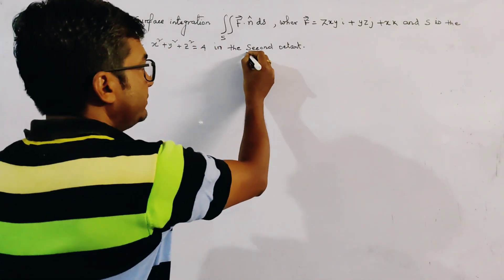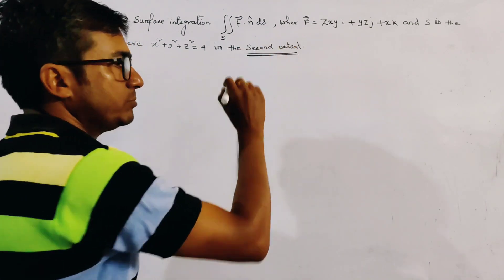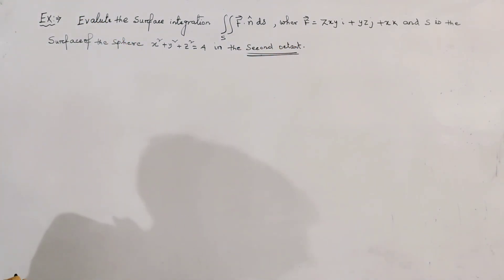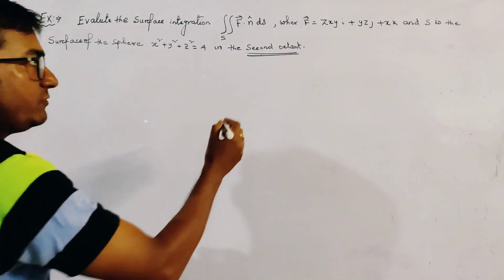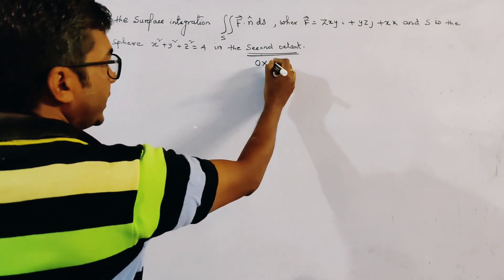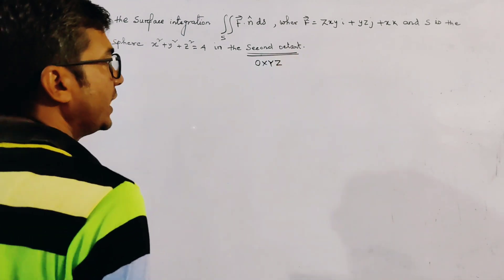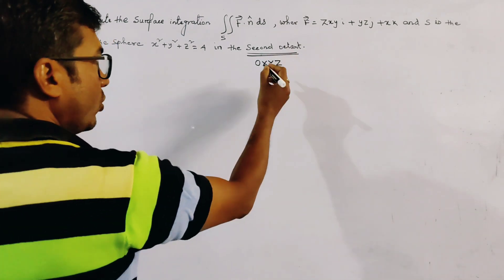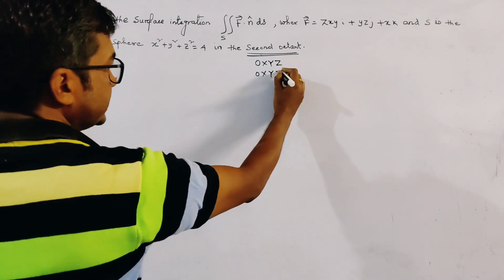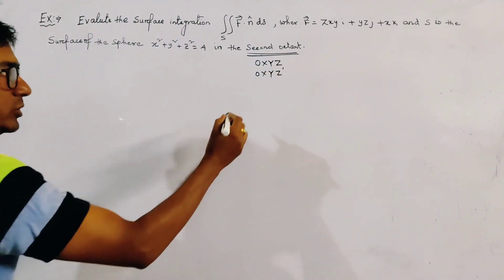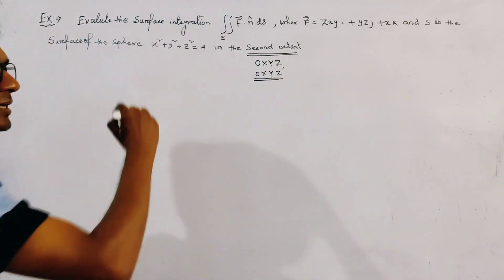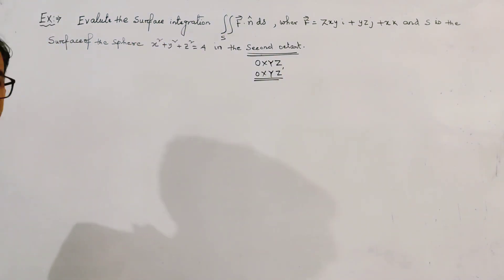Generally, problems are given in the first octant, but here it is given as the second octant. The first octant is given by (O, X, Y, Z) and the second octant is given by (O, X, Y, Z'), that is, we have to take the negative direction of the Z axis.